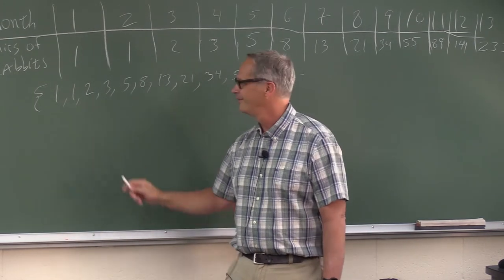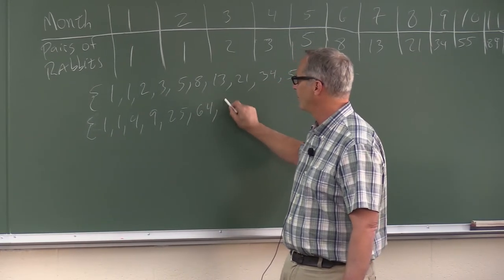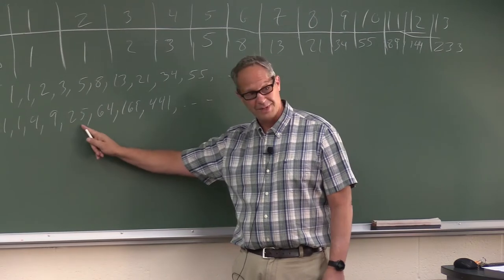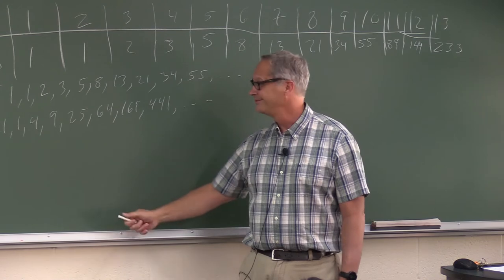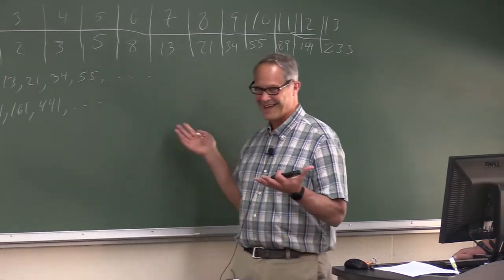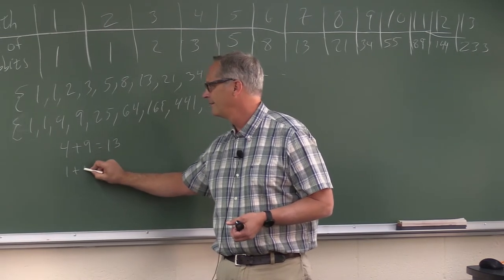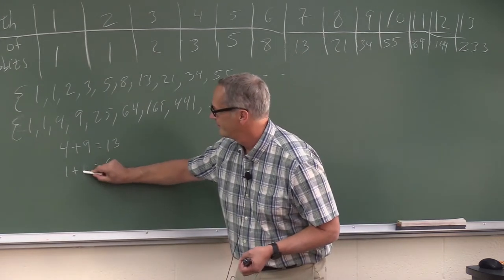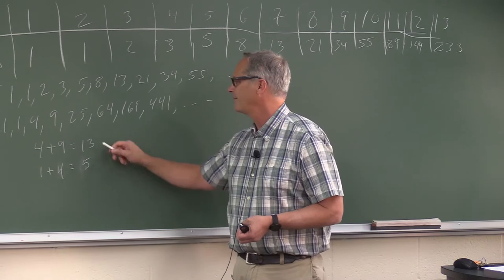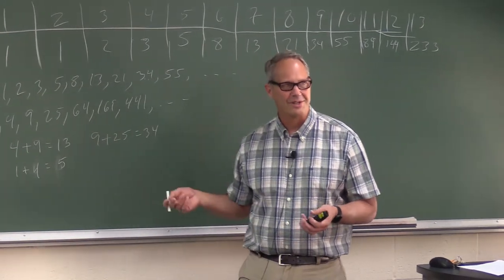The squares of the Fibonacci sequence would be 1, 1, 4, 9, 25, 64, 169, 441, and so on. If you take two adjacent pairs of numbers from this squared sequence and add them together — like four and nine, which gives thirteen — you recognize that number? It's in the Fibonacci sequence. Any pair: nine and twenty-five gives thirty-four. That property always holds true. That's a kind of interesting property the Fibonacci sequence has.